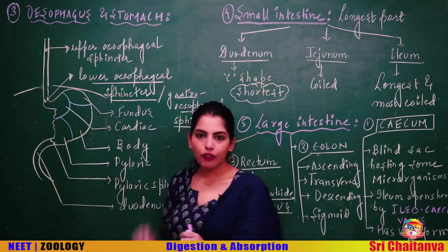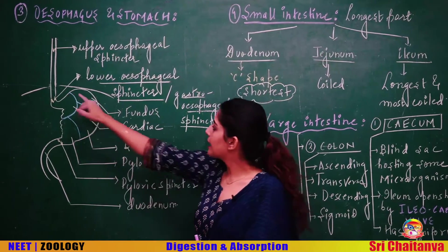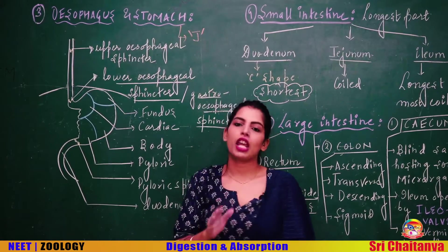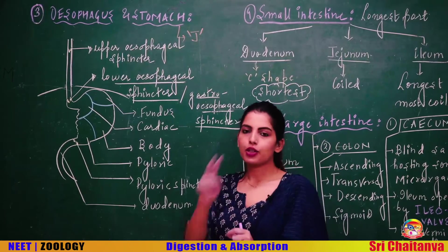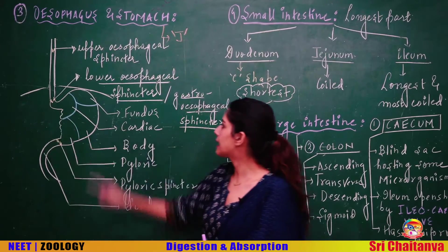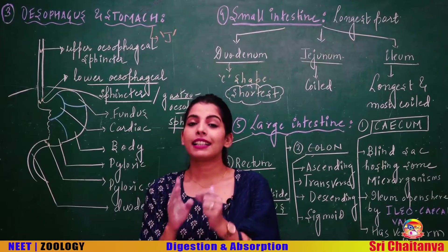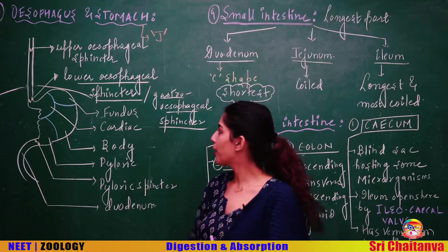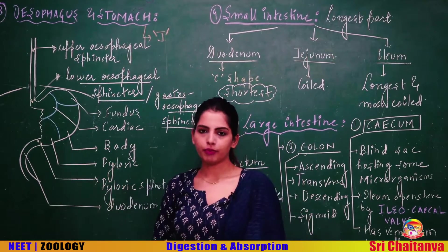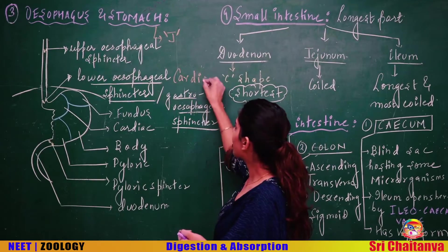Esophagus penetrates the diaphragm — the dome-shaped structure that helps in respiration — and leads to the stomach, which is J-shaped. There are two sphincters in the esophagus: the upper esophageal sphincter and the lower esophageal sphincter, also called the gastroesophageal sphincter, which regulates the entry of food from the esophagus into the stomach. It can also be called the cardiac sphincter.